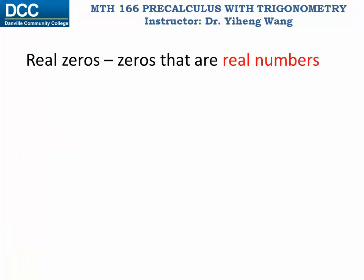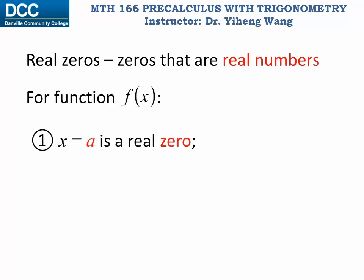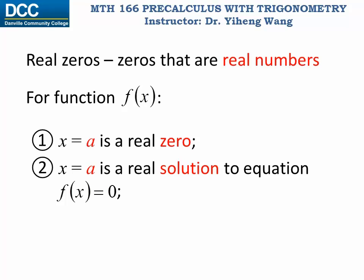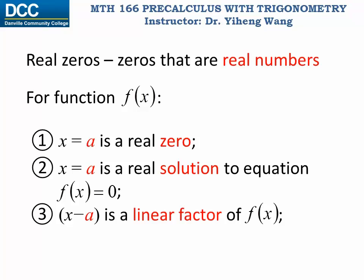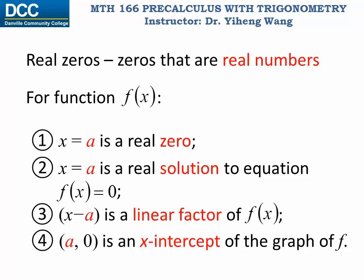We also need to know the real zeros of the function. For a polynomial function f, if x = a is a real zero — meaning f(a) = 0 and a is a real number — this is equivalent to saying x = a is a real solution to the equation f(x) = 0, that x minus a is a linear factor of f, and that a corresponds to an x-intercept on the graph. Knowing the real zeros allows us to plot the x-intercepts and sketch the graph.